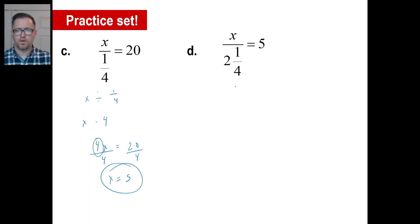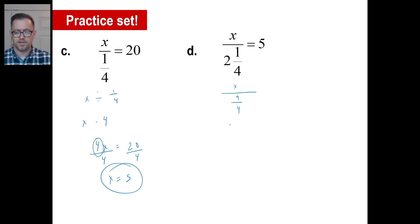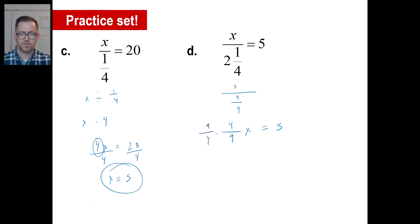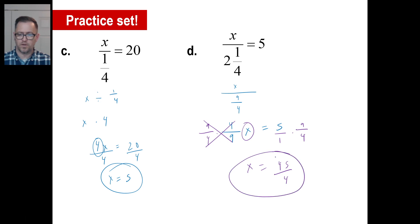For D, let's rewrite this as x divided by 9 fourths. That's x divided by 9 fourths, which is the same thing as x times 4 ninths. So you can write this equation as 4 ninths x equals 5. Now multiply both sides by the reciprocal of 4 ninths, which is 9 fourths. That's gone — we've got our x. x is equal to 5 times 9 over 1 times 4, so x equals 45 over 4.